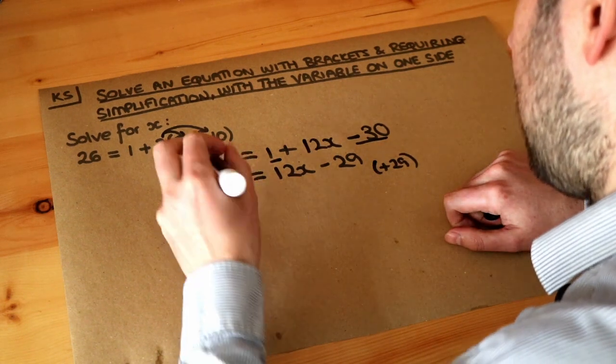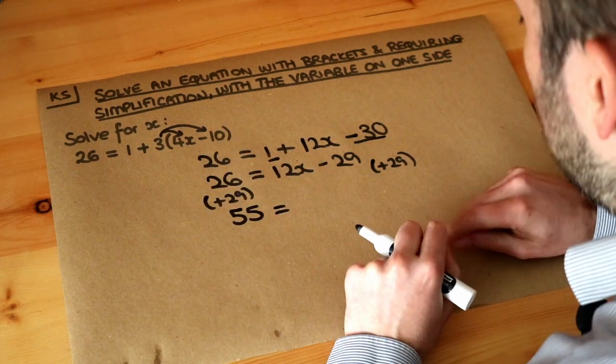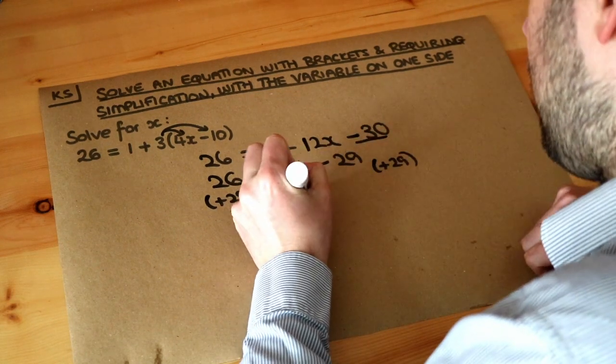26 plus 29 is 55, and then if we add 29 on the right-hand side of the equation, it just gets rid of the minus 29, just leaving the 12x.